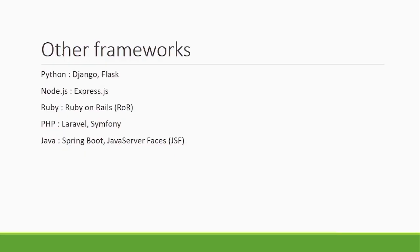What are the other frameworks for different programming languages? For Python, we have Django, Flask, and many more. For Node.js, we have Express.js. For Ruby, we have Ruby on Rails. For PHP, there is Laravel and others. For Java, there is Spring Boot and other frameworks. So for every programming language, there are frameworks that help us create applications quickly because we don't have to write everything from scratch.